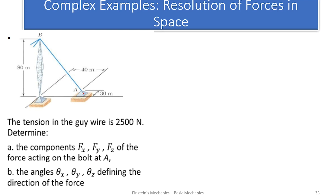In this example, we are given an image of a wire and we have to find the x, y, and z components of the force. The force is the tension in the wire, which is 2500 Newtons. In such cases where you have an image and you have to deduce the components from the force, remember the force is the tension in the wire.